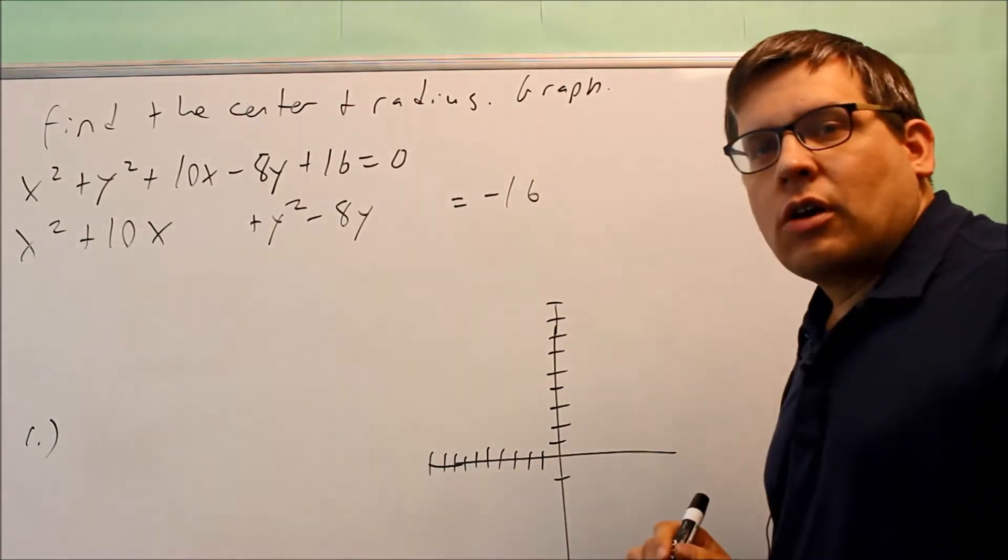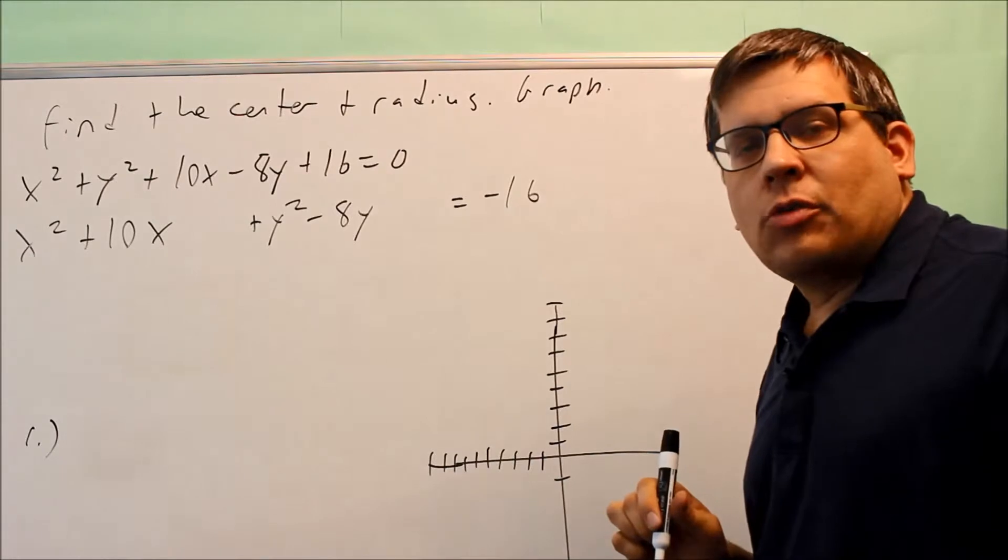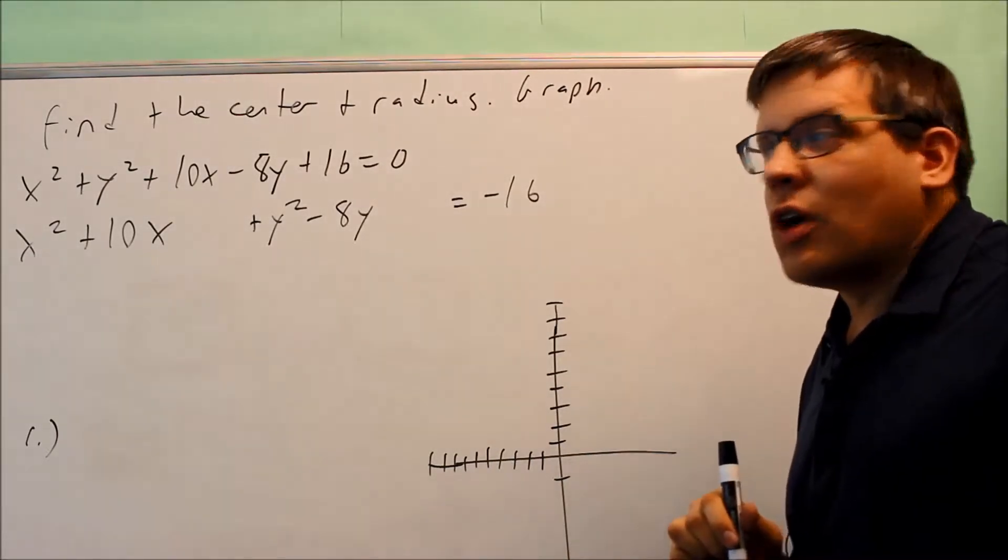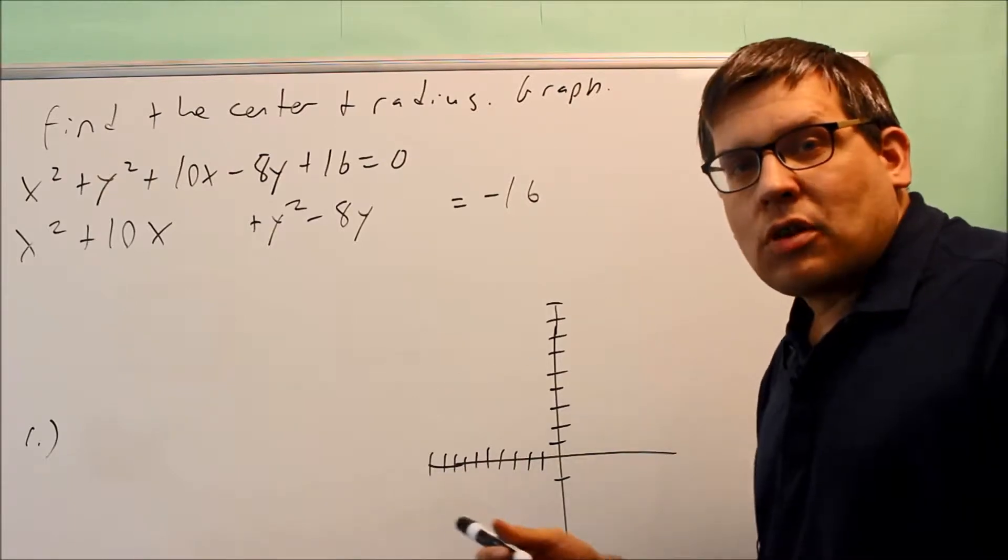We'll complete the square. You're working with the number in front of the non-squared variable. And there's always two steps you're going to do to that. The first step is divide that number by 2. The second step is to square it.